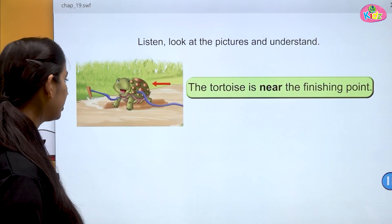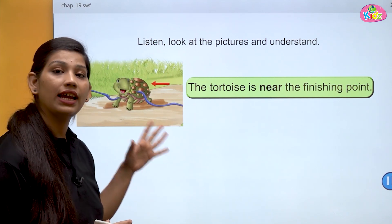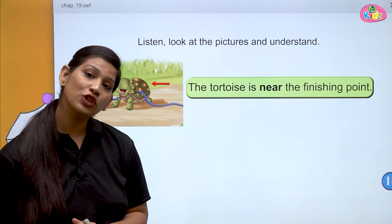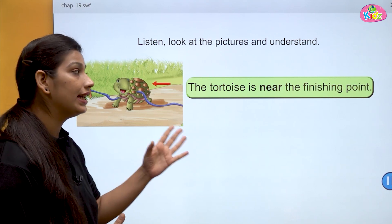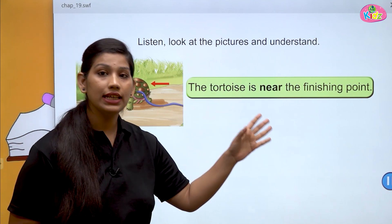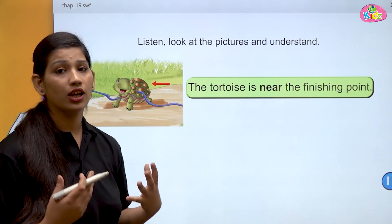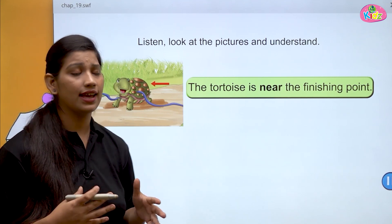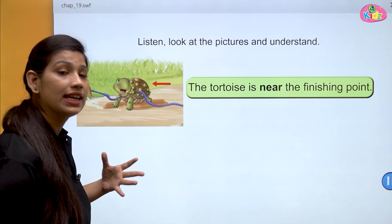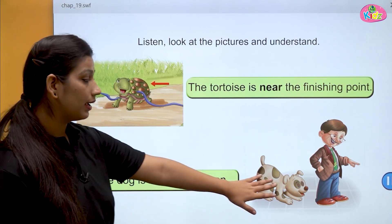Here students, you can see a line — this line is the finishing point of a race. Aur tortoise abhi is line ke paas pohunch chuka hai. Toh paas ke liye word hota hai near. The tortoise is near the finishing point. Agar koi bhi cheez mere aas paas hai toh main word use karongi near.